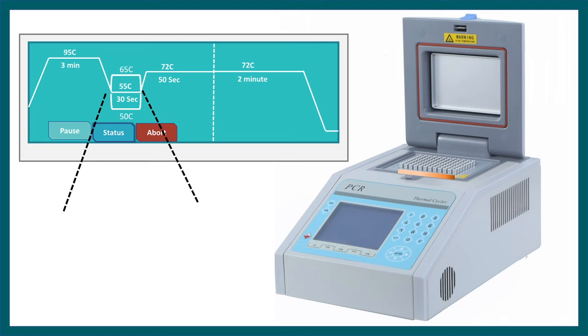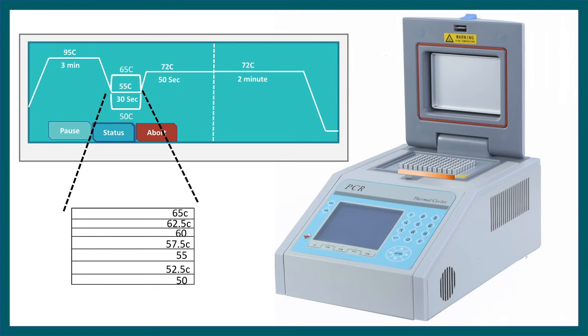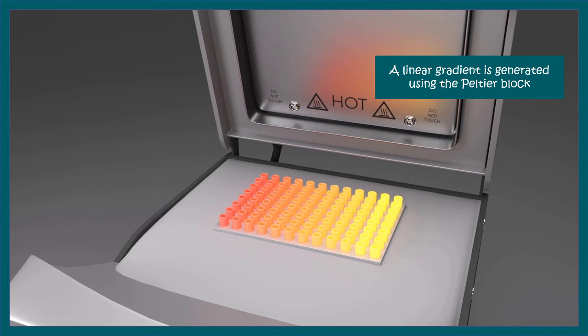So for this example, the cycler would have a temperature range from 50 degrees Celsius to 65 degrees Celsius with an increment of 2.5 degrees Celsius. And this is how the thermal cycler would heat up in this particular step. So instead of one annealing temperature, we are using multiple different annealing temperatures, just to test at which particular temperature primer annealing is optimum and we get a proper amplification which is specific.